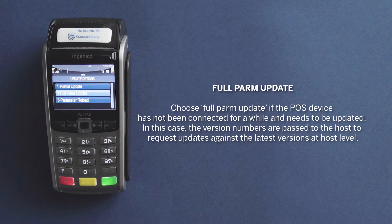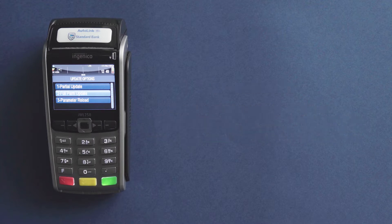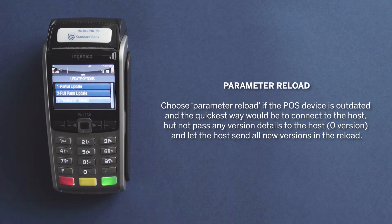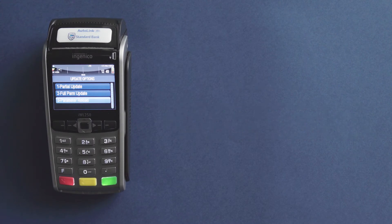This is advised if your AutoLink device has not been connected for a while and needs to be updated. In this case, the version number is sent to the host to request any new updates against the latest version at host level. Choose Parameter Reload if your AutoLink device is outdated. This is the quickest way to connect to the host and receive the latest version to do a reload.